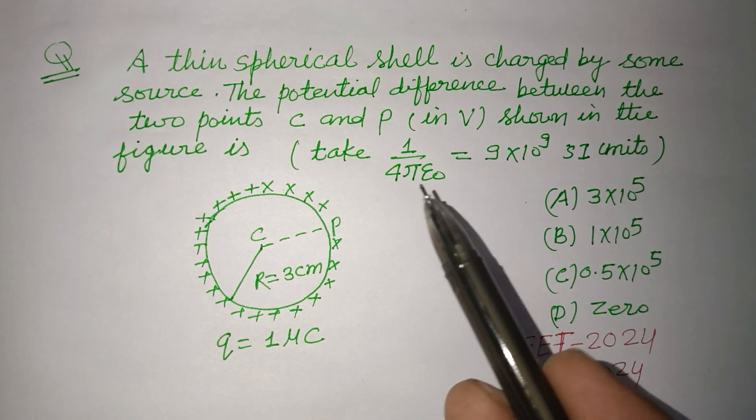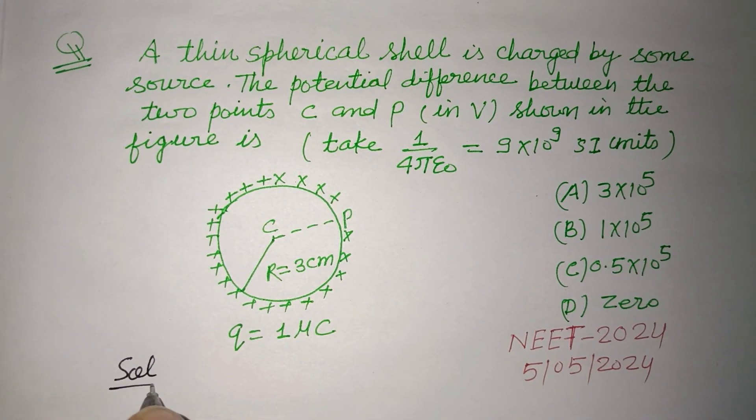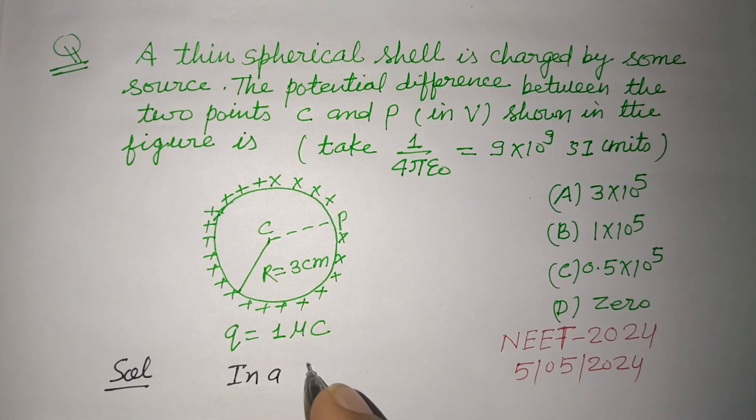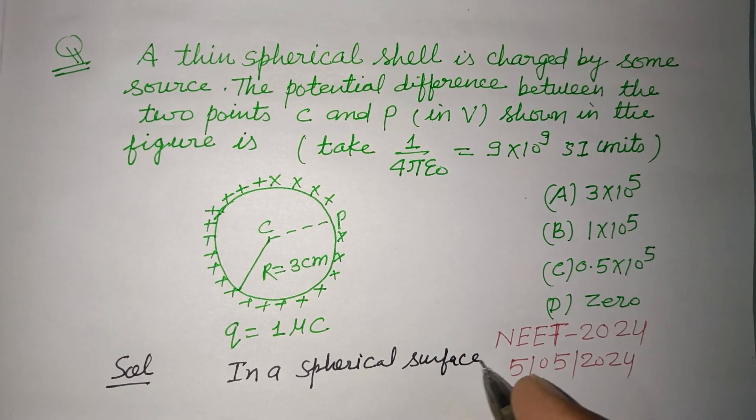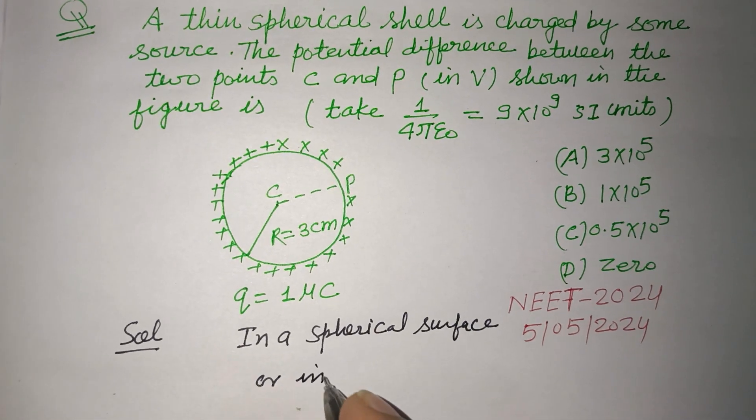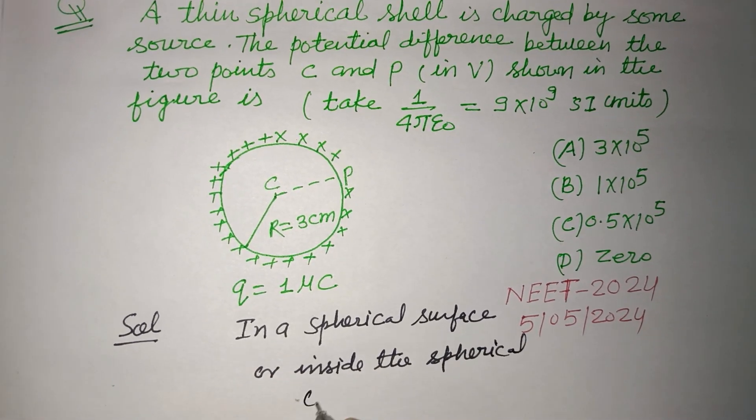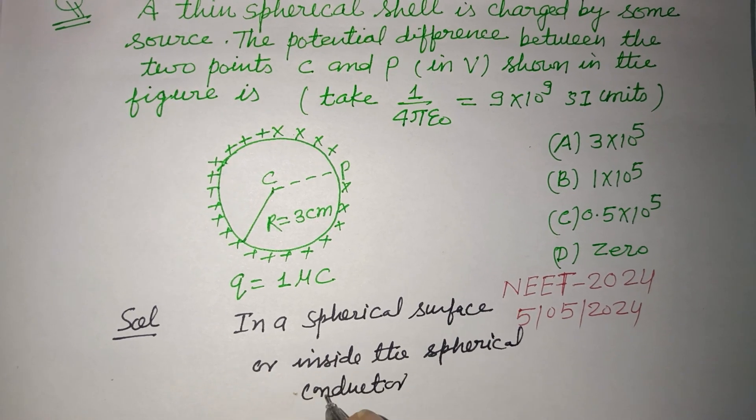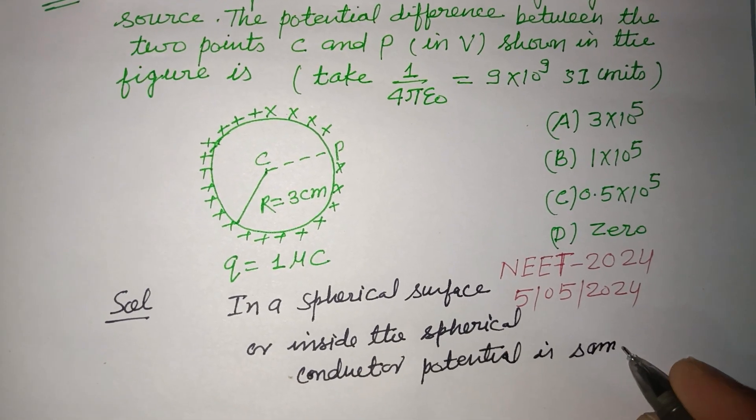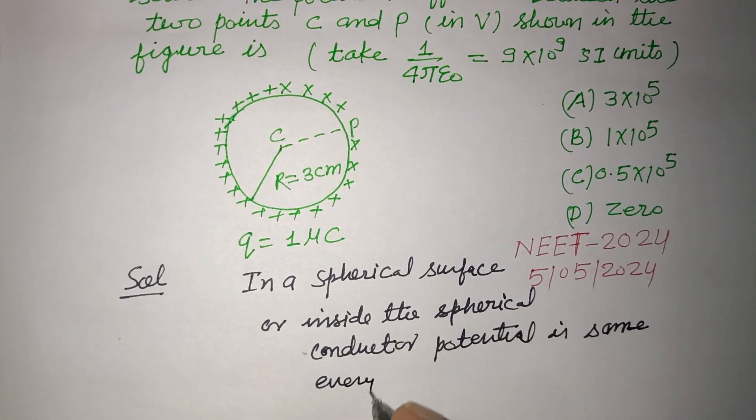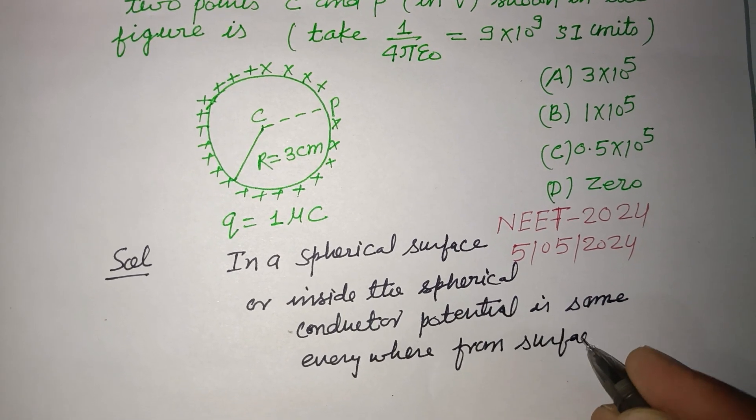The potential difference between the two points C and P shown in the figure. In a spherical surface or inside the spherical conductor, potential is same everywhere from surface to center.